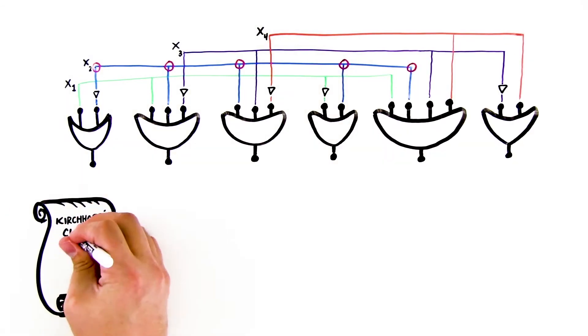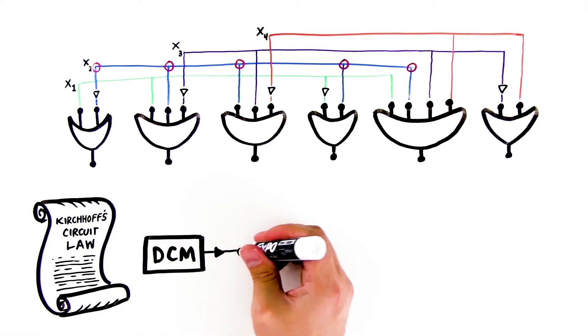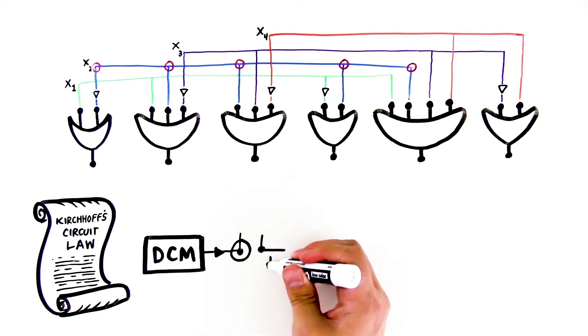The physics of Kirchhoff's circuit law and circuit theory tells us that when the asynchronous signals sent by DCMs meet at a node, they will be superimposed and redistributed.